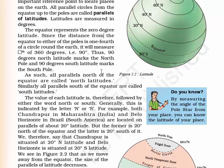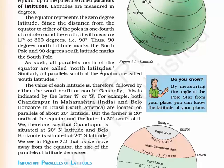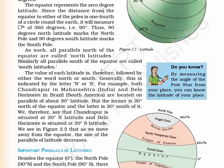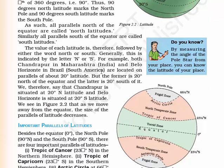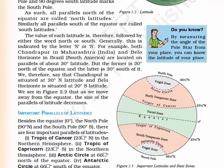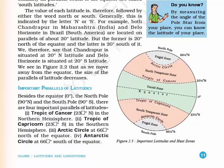There are some important parallel latitudes you have to remember. The equator is zero degrees. The North Pole is represented as 90 degrees north and the South Pole as 90 degrees south. The Tropic of Cancer is 23.5 degrees north. The Tropic of Capricorn is 23.5 degrees south. The Arctic Circle is 66.5 degrees north. The Antarctic Circle is 66.5 degrees south.